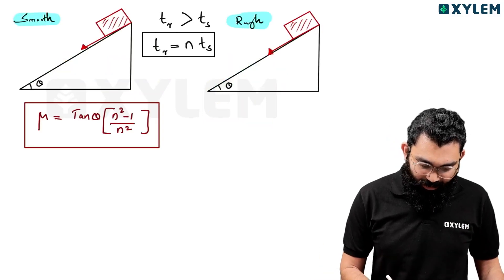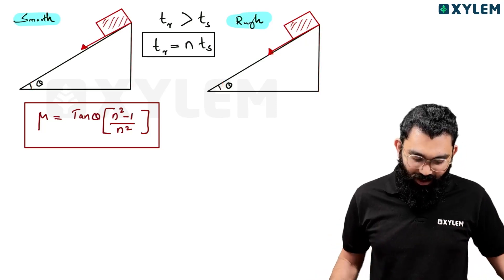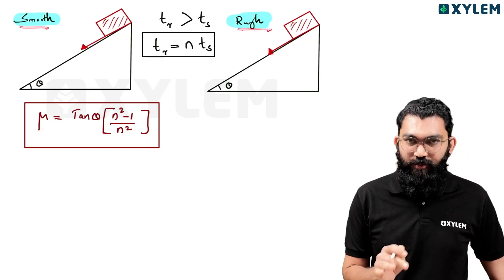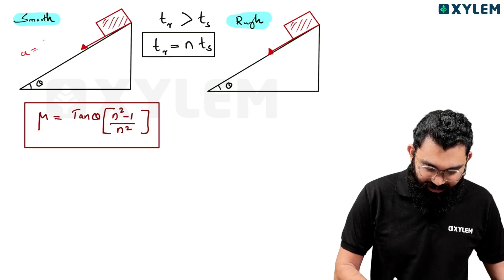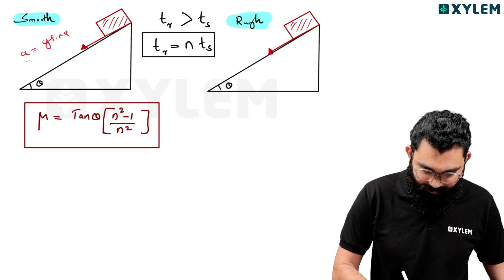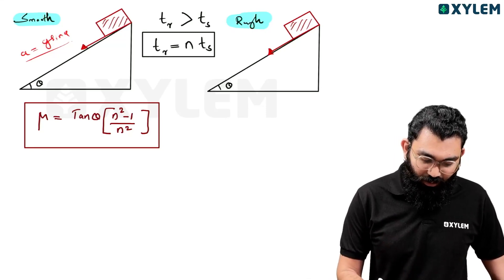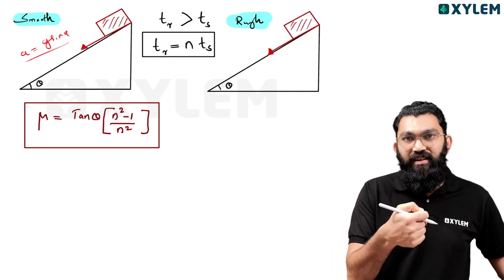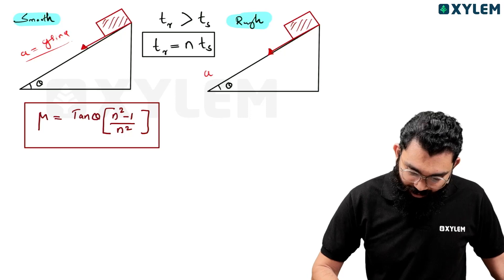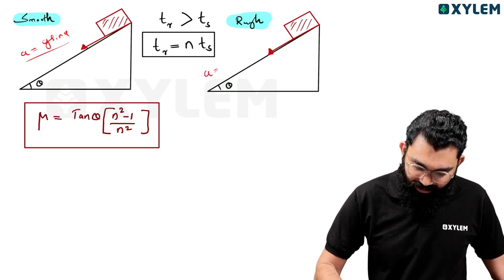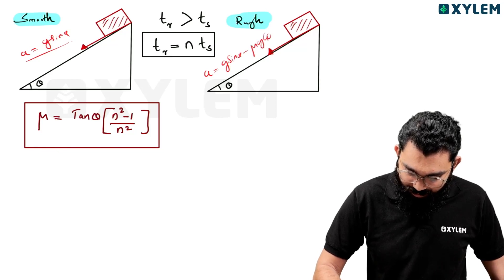Look at two surfaces: one angle of inclination, one height maintained, two inclined surfaces — one is smooth and one is rough. The smooth surface has no friction, so the object slides with acceleration g sin θ. The rough surface has friction, so the net force is mg sin θ minus the frictional force μmg cos θ. The net acceleration along the inclined plane is g sin θ minus μg cos θ.